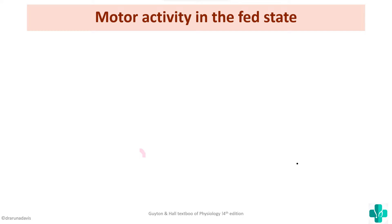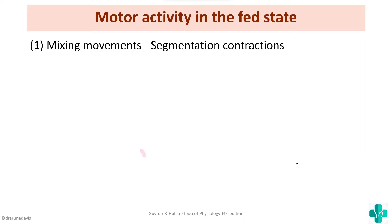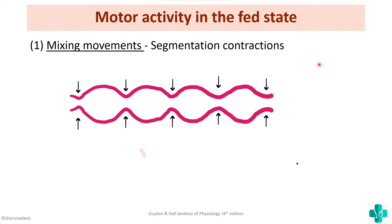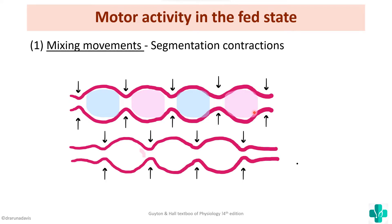The first example of a movement in the fed state is mixing movements, and a very good example is segmentation contractions, which occur in the small intestine. In segmentation contraction, there will be constrictions of the muscle layer at regular intervals, causing the food present to be broken down into segments. Then contractions occur in other areas while the initially contracted areas relax, resulting in mixing of the chyme. In this type of movement, there is no forward movement of food — only proper mixing.